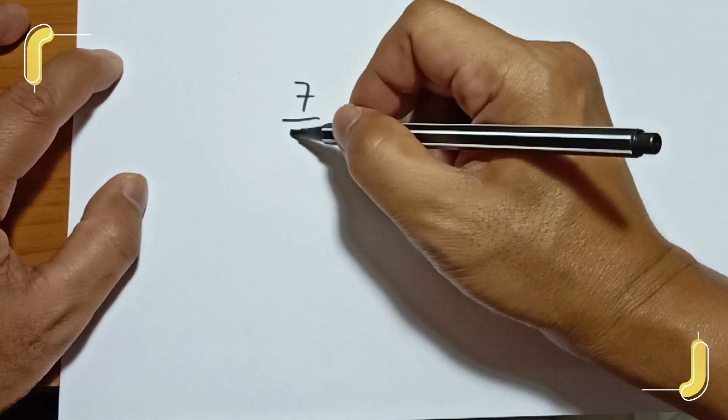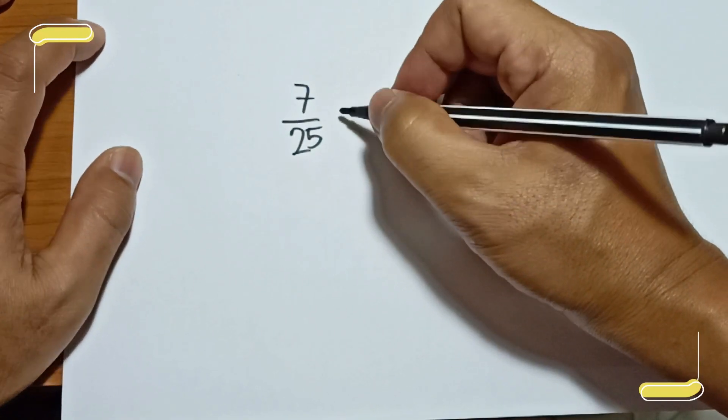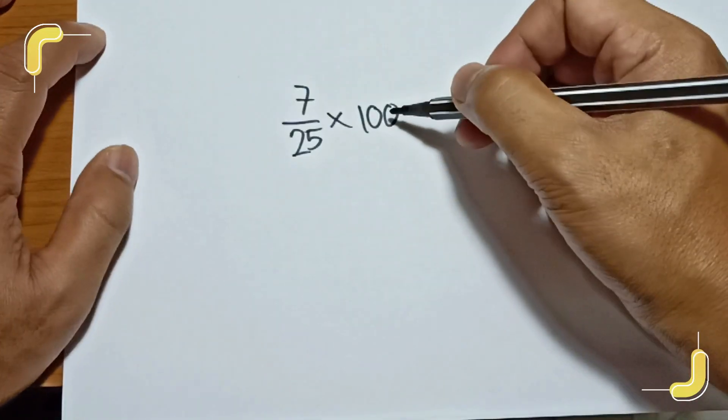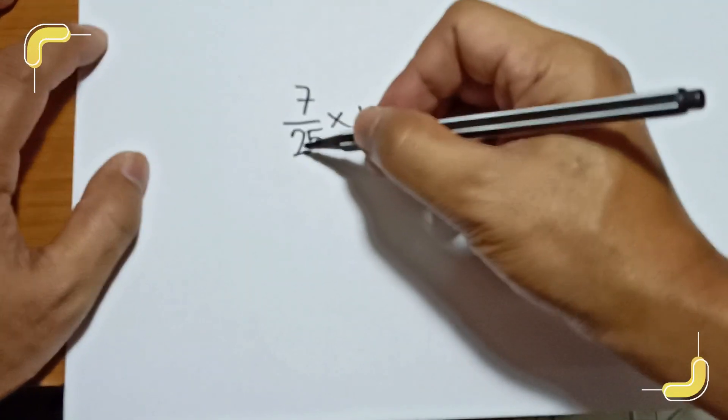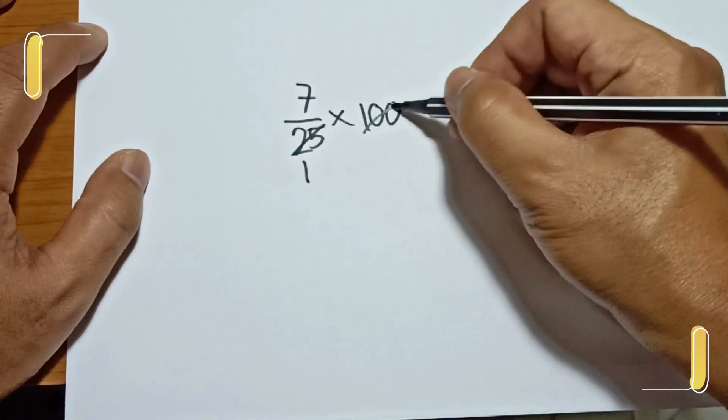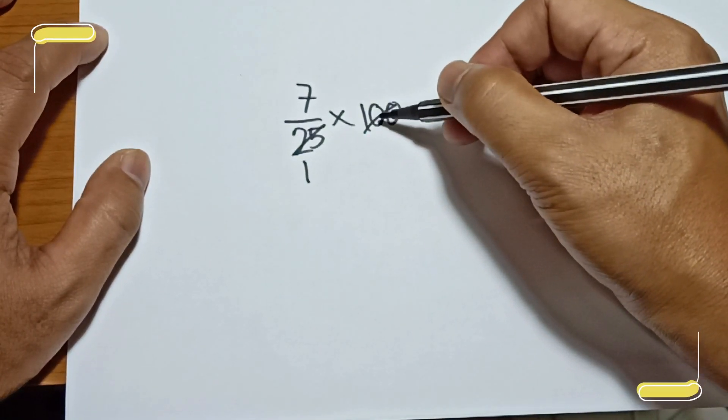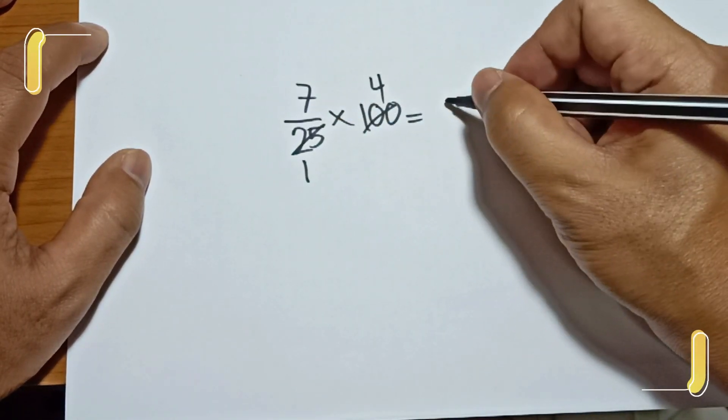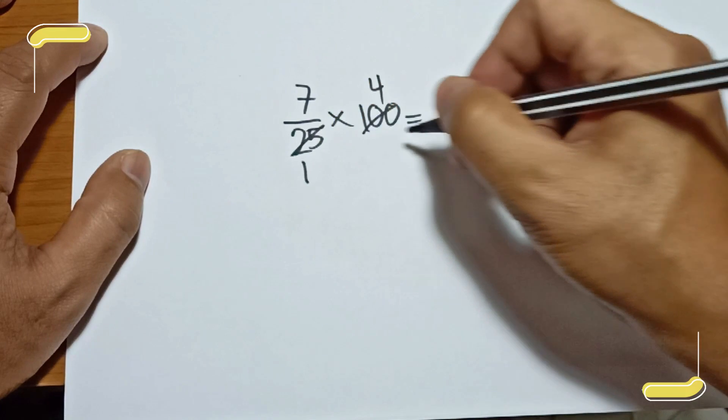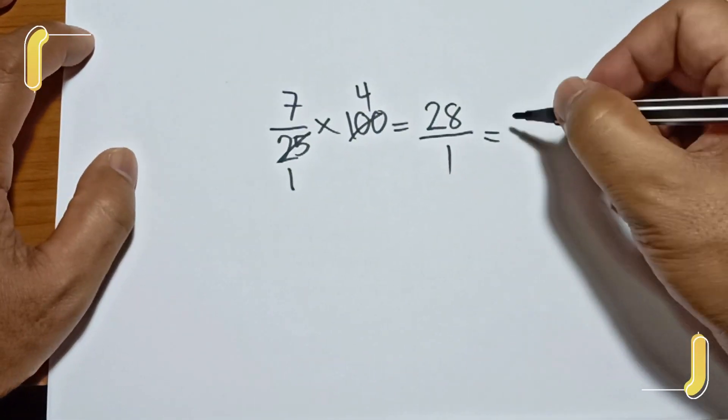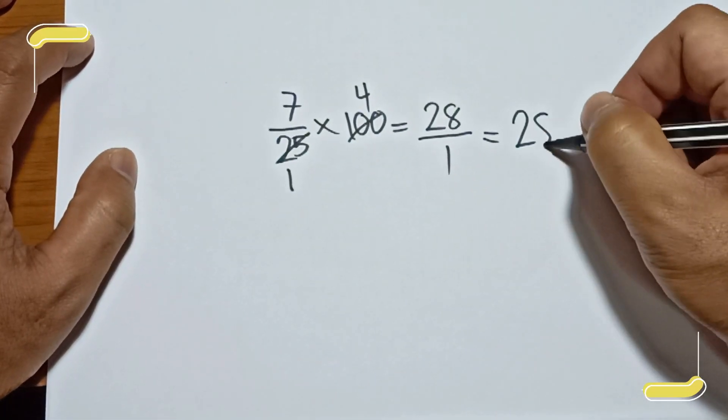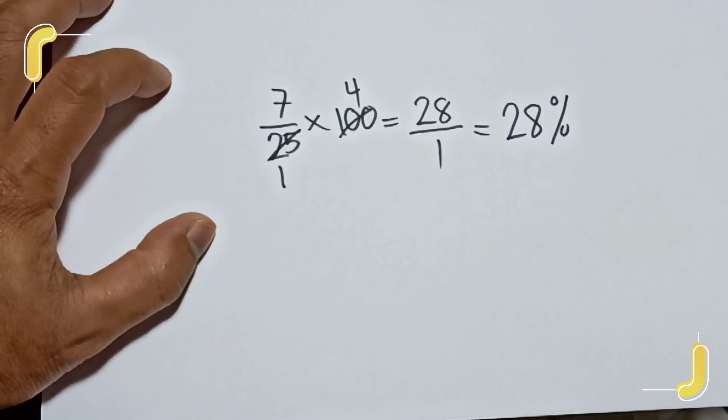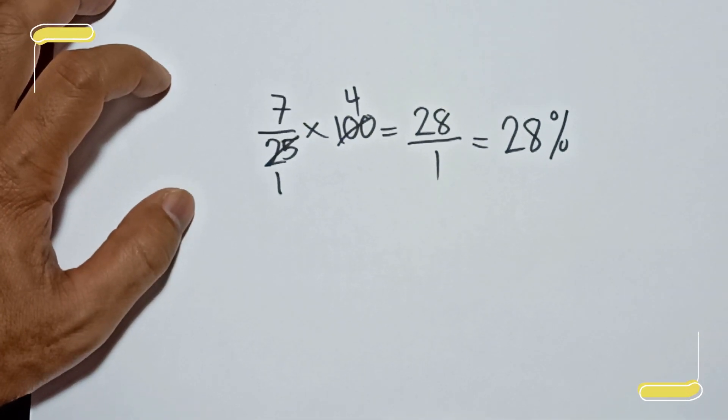Another one: 7 over 25. Convert to percentage by multiplying by 100. So 25 and 100 are divisible by 25. 25 divided by 25 is 1, then 100 divided by 25 is 4. And then 7 times 4 is 28 over 1, or that is equal to 28 percent. Therefore, 7 over 25 is 28 percent.